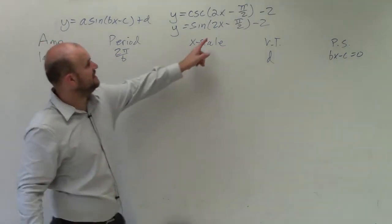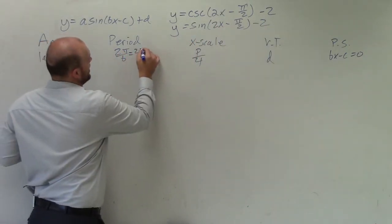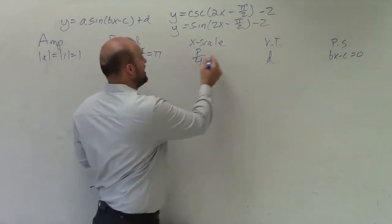Period is 2 pi divided by b, which you can see our b in this case is 2. So that's 2 pi divided by 2, which is just equal to pi. My x scale is just pi divided by 4.